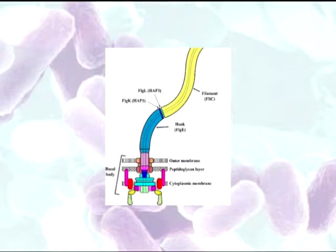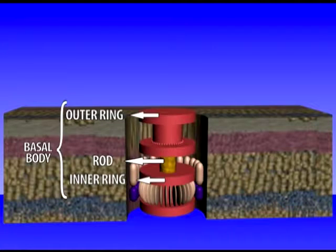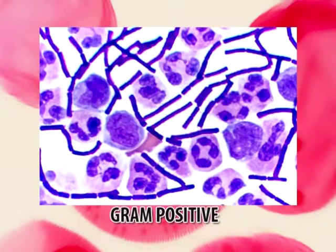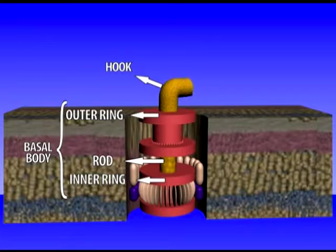Each flagellum is attached to the cell membrane by a basal region consisting of proteins other than flagellin. A flagellum has three important parts: the basal body associated with the cell membrane and wall, a hook connecting the basal body to the helical filament, and the filament itself. Gram-negative bacteria have two pairs of rings — one in the cell membrane and another in the cell wall — while gram-positive bacteria have just one pair. When flagella bundle together and rotate counterclockwise, they allow bacteria to run in a straight line.